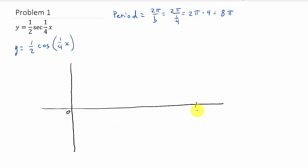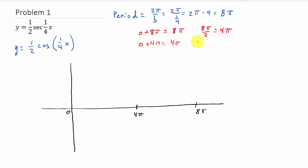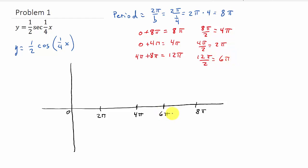We're going to graph from 0 to 8 pi and break it into 4 equal intervals. Midpoint of 0 and 8 pi: 0 plus 8 pi is 8 pi, halved gives 4 pi. Midpoint of 0 and 4 pi: halved gives 2 pi. Midpoint of 4 pi and 8 pi: 4 pi plus 8 pi is 12 pi, halved gives 6 pi.